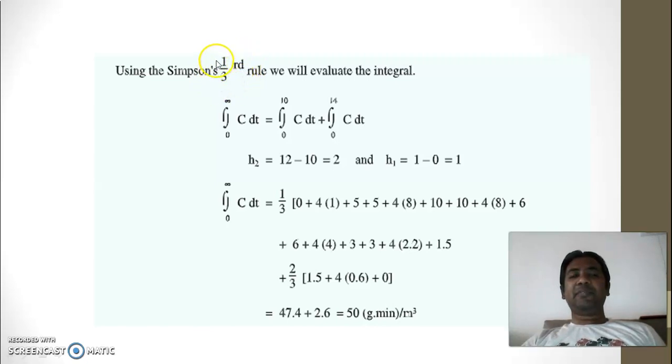So we will use Simpson's one third rule here, but you can use trapezoid rule or other rules also for calculating integration and calculating the total concentration. Or you can use the graph of C versus T. Just you have to plot concentration versus time data and then area under curve will give the value of C.